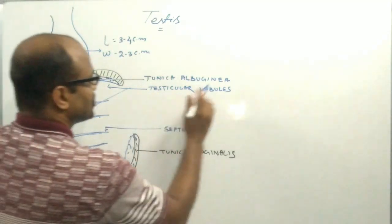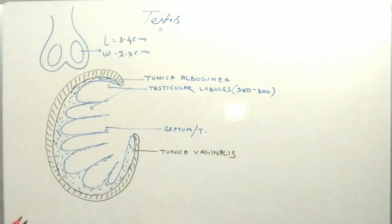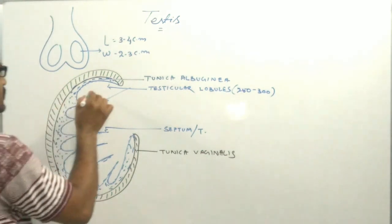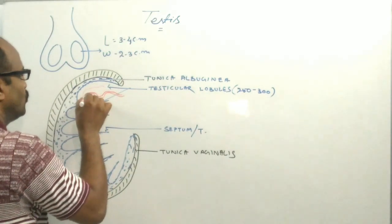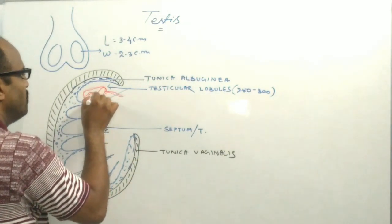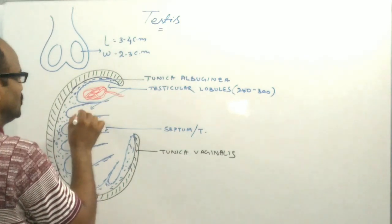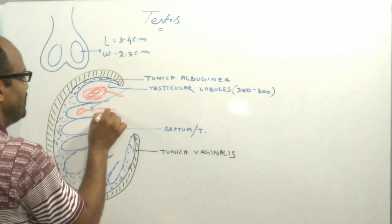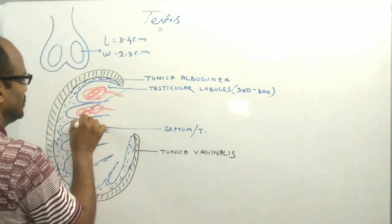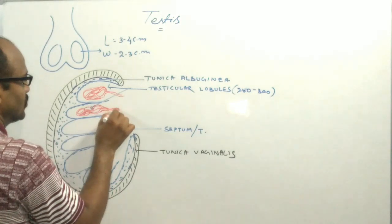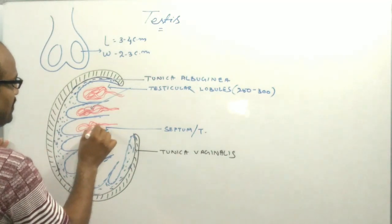The number of testicular lobules is 250 to 300. Each testicular lobule contains 2 to 4 highly coiled tubular structures known as seminiferous tubules. These red-colored coiled tubules are the seminiferous tubules.